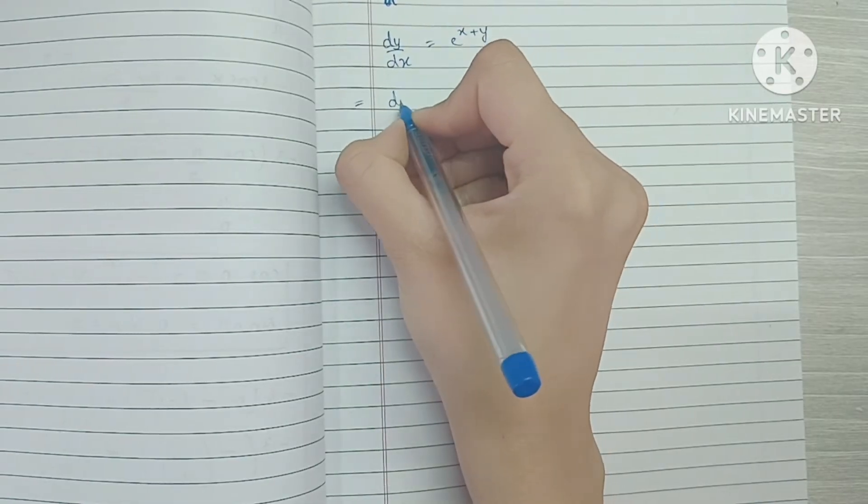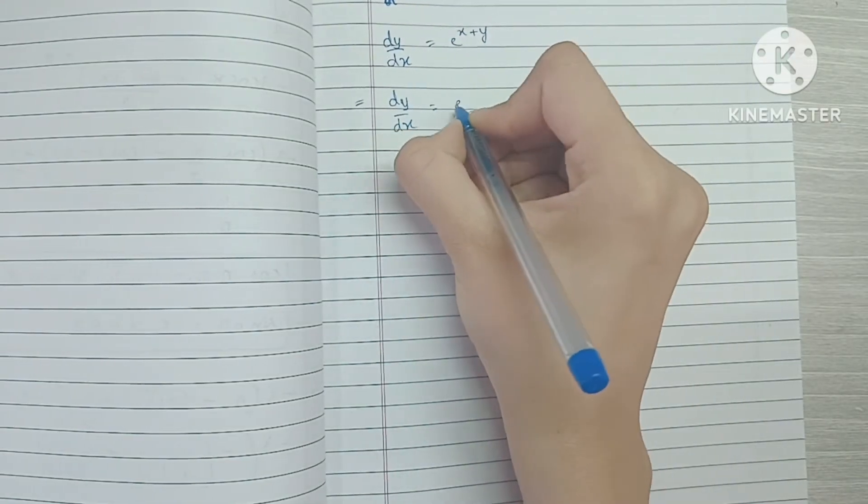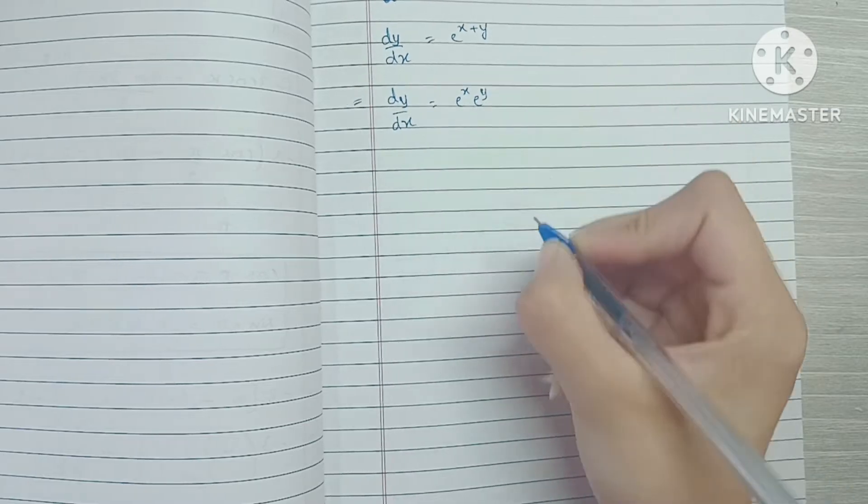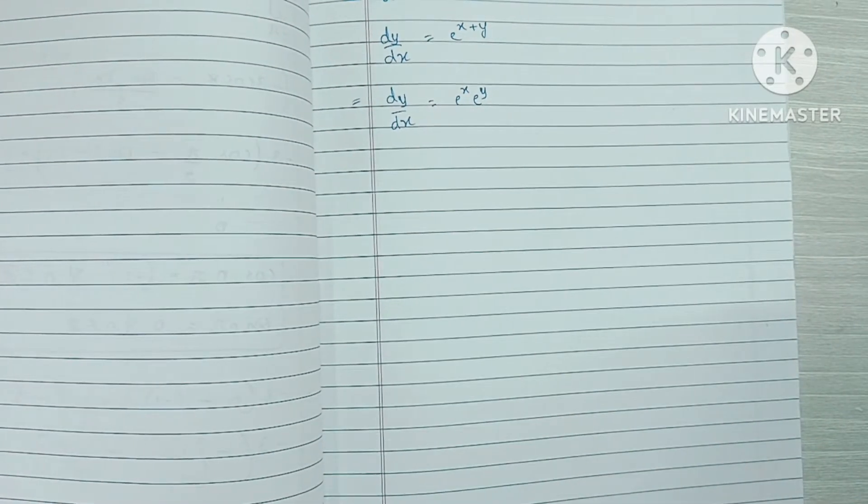So e raised to x plus y can be written as e raised to x into e raised to y, just by basic rule of exponents.